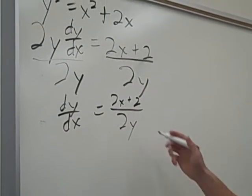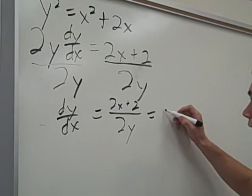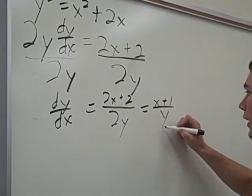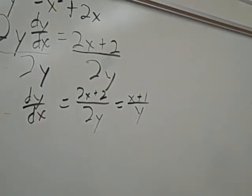We get dy dx equals 2x plus 2 over 2y. Now we can factor out a 2 from the top and bottom, leaving us with x plus 1 over y, that equals dy dx.